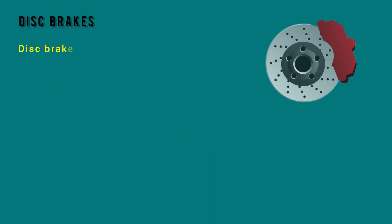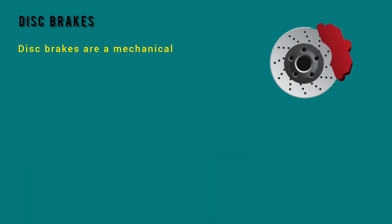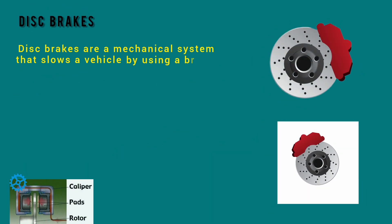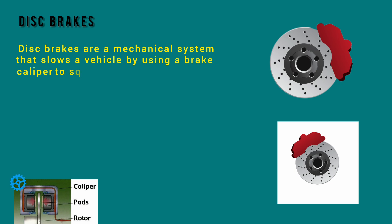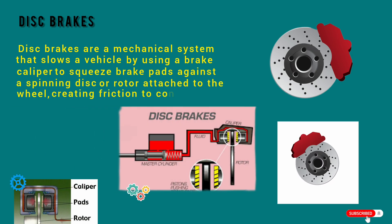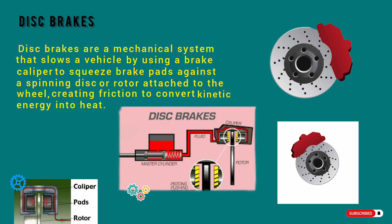Disc Brakes. Disc brakes are a mechanical system that slows a vehicle by using a brake caliper to squeeze brake pads against a spinning disc or rotor attached to the wheel, creating friction to convert kinetic energy into heat.